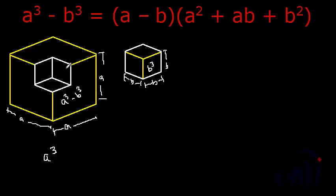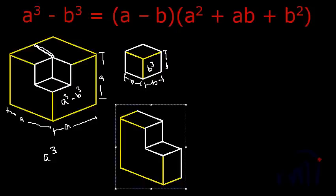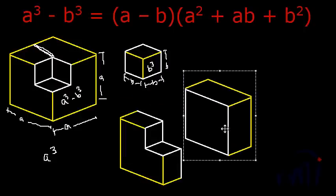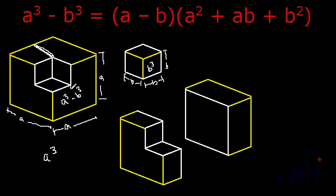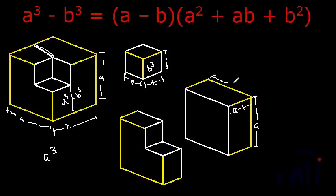So if we are able to find the volume of this solid, we will get the value of A cube minus B cube. For that, I am going to cut it along this line. If I cut it along this line, I will get two shapes — one cuboid and one L-shaped solid. The cuboid will have height A, width A, and thickness A minus B. So its volume will be A square multiplied by A minus B.